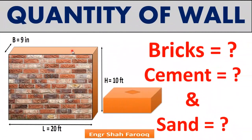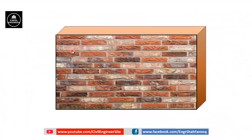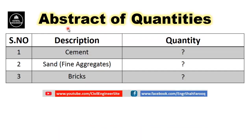Hello dear friends, welcome back to your YouTube channel Civil Engineer. Today we are going to discuss quantities of the materials required for the construction of a brick masonry wall. In this short video lecture we are going to learn calculating the number of bricks required for a given brick masonry wall, and then we will also calculate the mortar composition — quantity of cement and quantity of fine aggregate or sand.